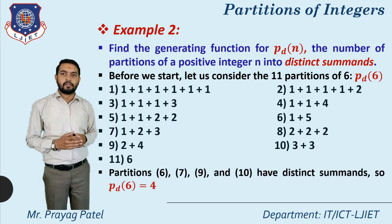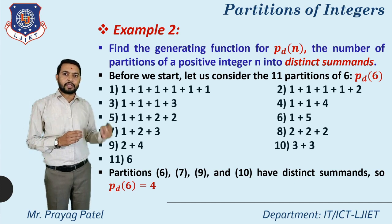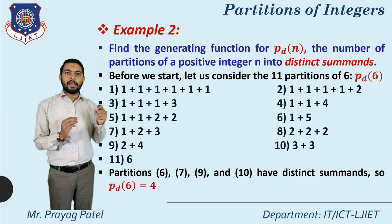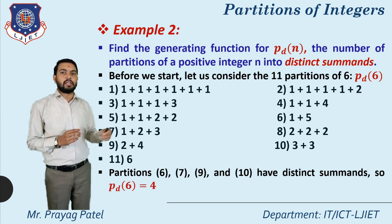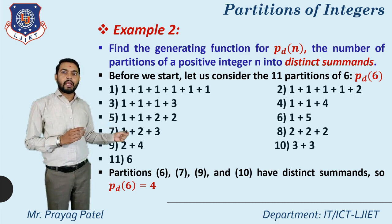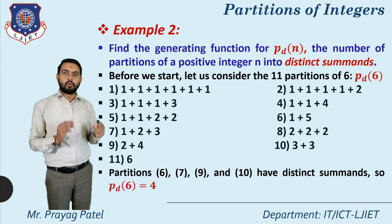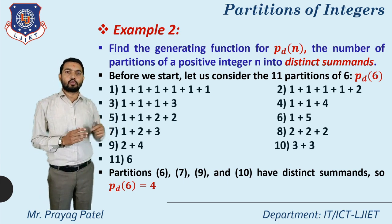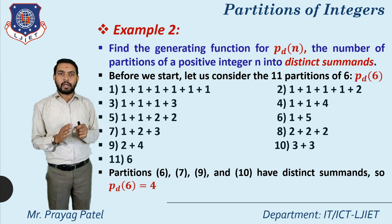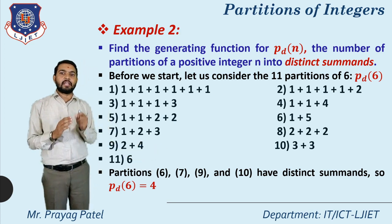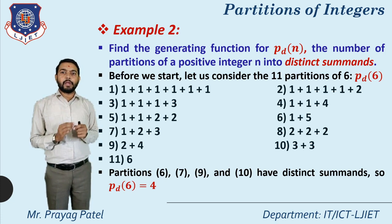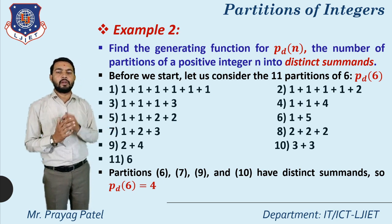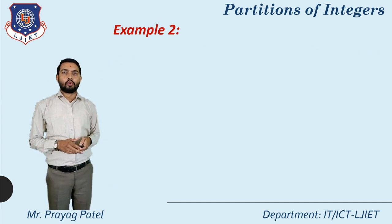For p_d(6), we consider only partitions with all distinct elements. From the 11 partitions: option 6 is 1+5 (both different); option 7 is 1+2+3 (all different); option 9 is 2+4 (both different); option 11 is 6 (single element, distinct). Option 10, which is 3+3, is not distinct. So p_d(6) equals 4, corresponding to partition equations 6, 7, 9, and 11.